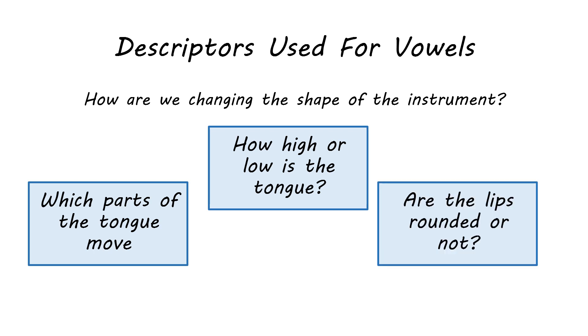And lastly, are the lips rounded or not? Which sort of changes the shape of the bell of your instrument because it changes the length of your vocal tract to have lips rounded.